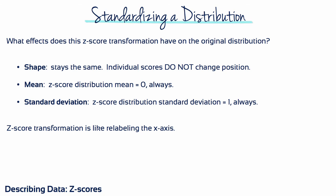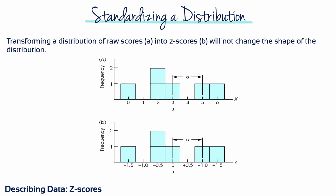The z-score distribution will always have a mean of 0 and will always have a standard deviation of 1. You can think of the z-score transformation as simply relabeling the values along the x-axis. That is, after a z-score transformation, you still have the same distribution, but now each individual is labeled with a z-score instead of an x-value.